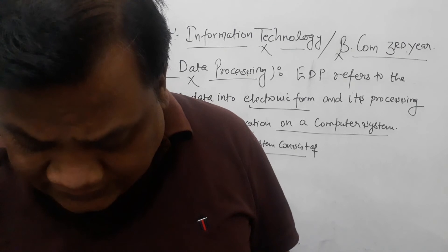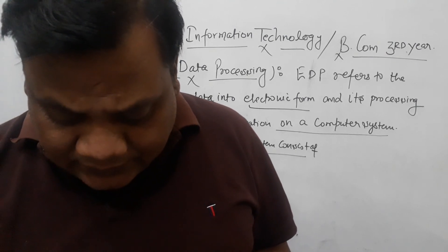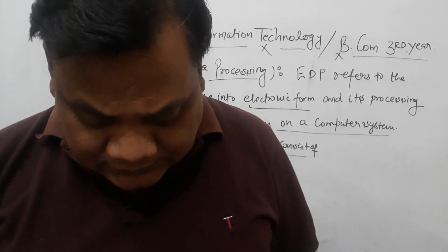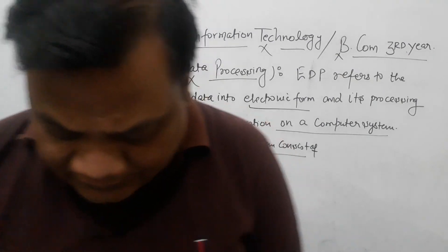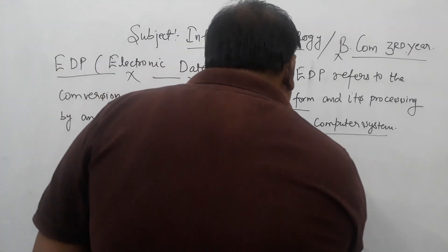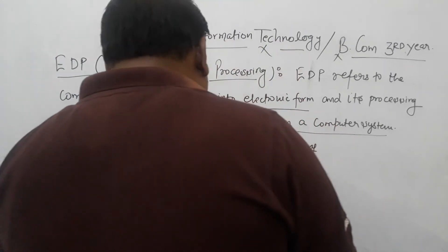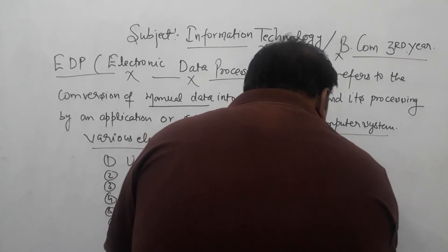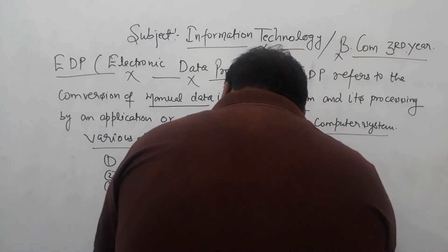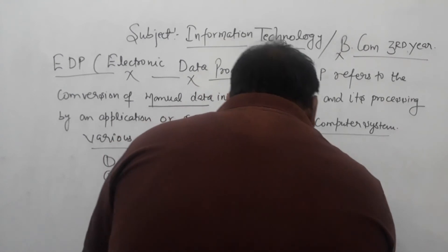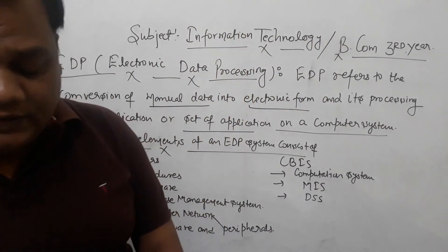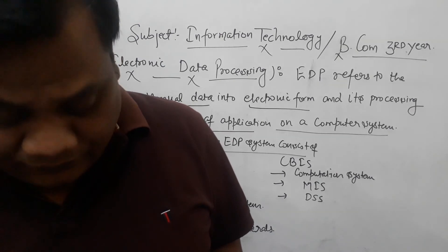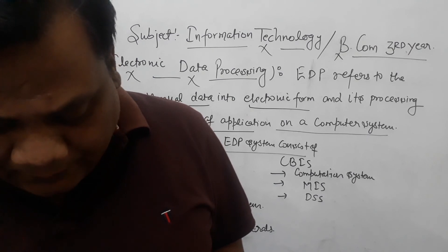There are various types of CBIS used in business data processing, continuously evolving in nature. The broad categories of CBIS include: first, Computation System — it is concerned with basic simple computation tasks through customized or ready-made software using computer-based tools. The working performed with these types of systems consists of repetitive and structured tasks.